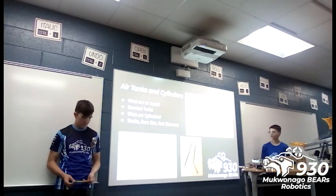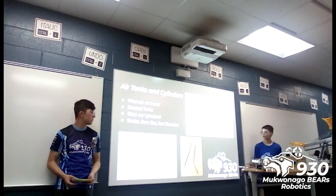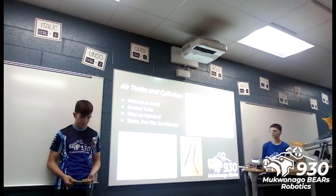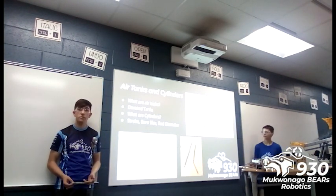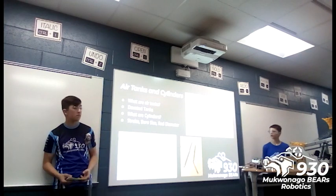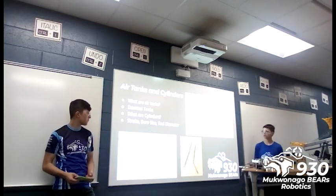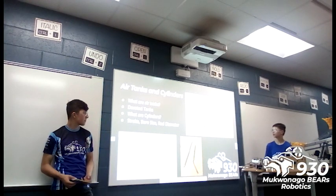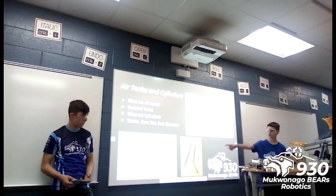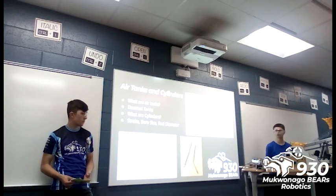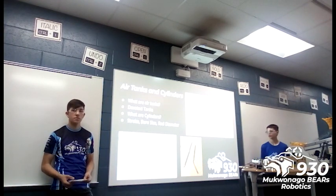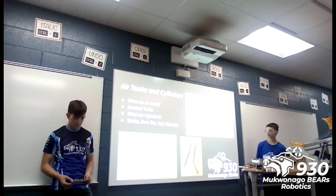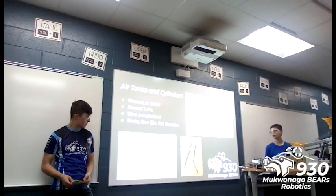The main ways cylinders differ are stroke, bore size, and rod diameter. Stroke is the difference between the cylinder's extended length and retracted length — how far the piston will extend. A larger stroke means a larger piston using more air. Bore size is the inner diameter of the piston; a larger inner diameter means a larger cross-sectional area, which determines how powerful your piston is. A larger cross-sectional area means more force — so the extend mode is actually stronger than the retract mode, because the rod takes up part of the surface area on the retract side.